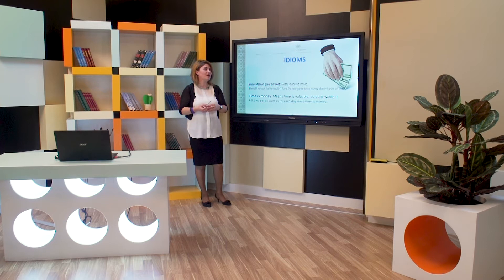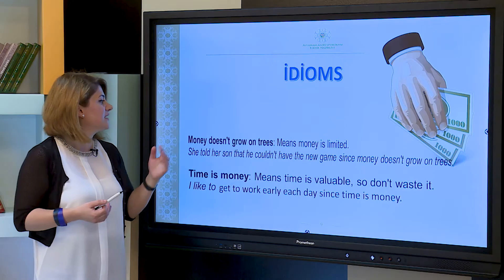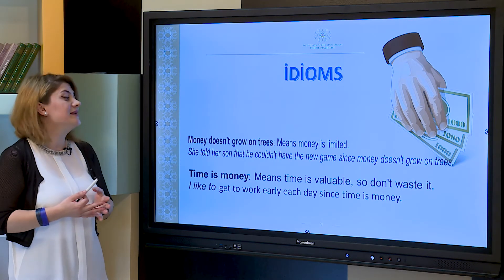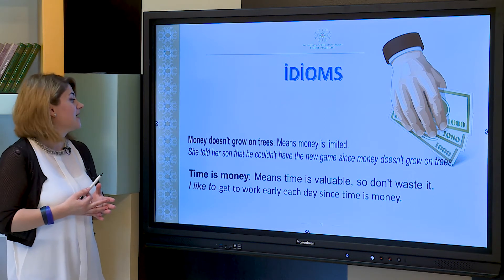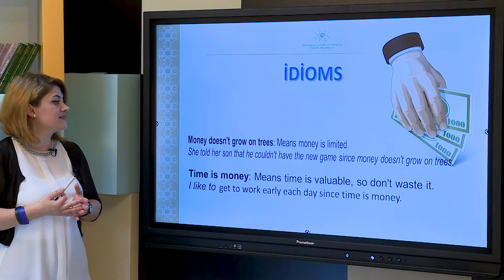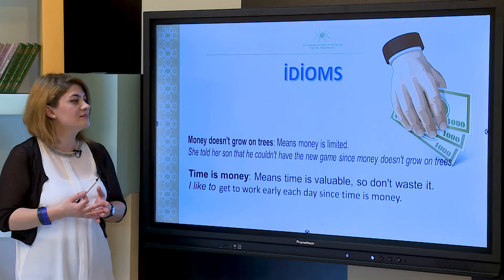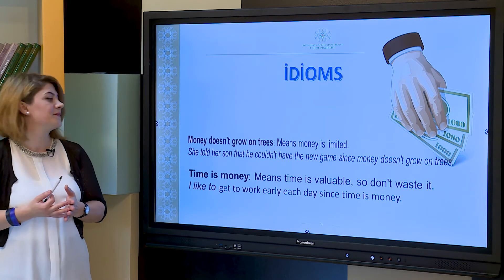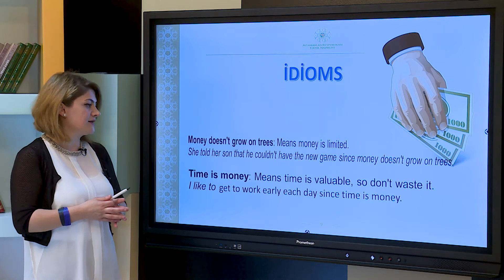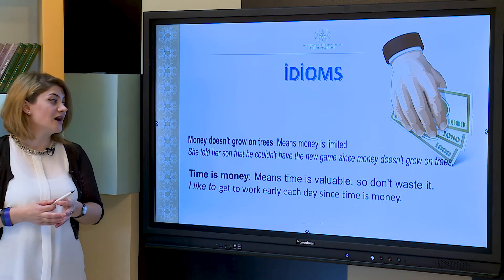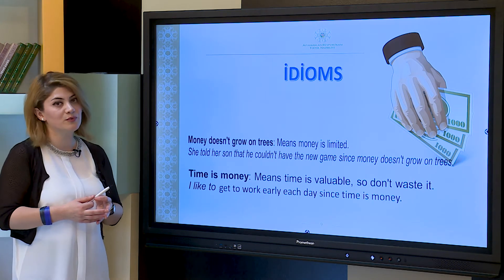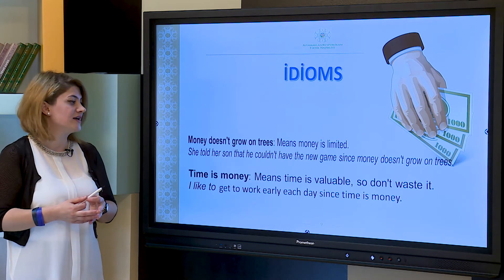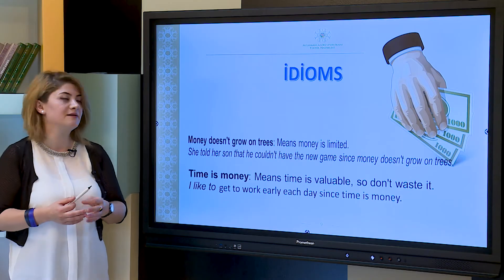Now our today's idioms about money. The first idiom: money doesn't grow on trees — means that money is limited. For example: she told her son that he couldn't have the new game since money doesn't grow on trees. Time is money — this means that time is valuable, so don't waste it. For example: I like to get to work early each day since time is money.